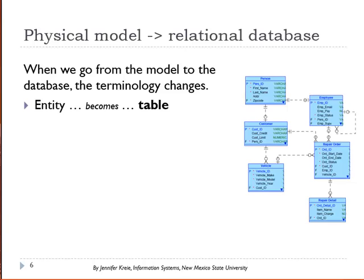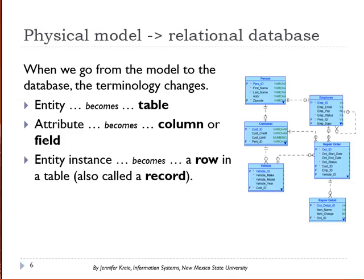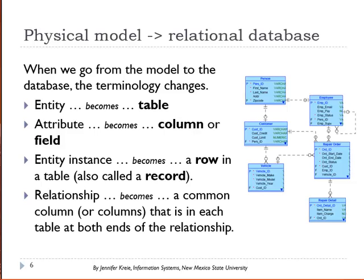An entity becomes a table in the database. An attribute in the data model becomes a column or a field in a table. An entity instance in the model becomes a row or record in a table. The relationship becomes a common column or columns that is in each table at both ends of the relationship.